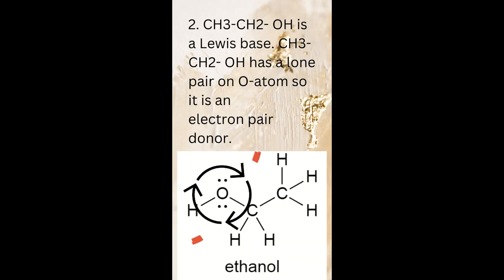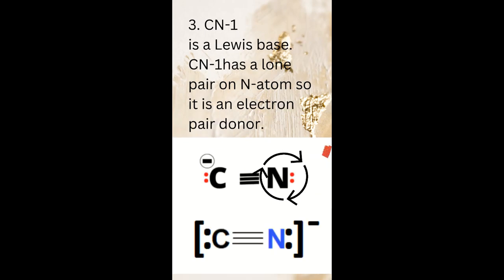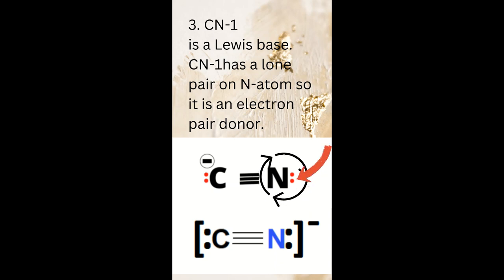Number two: CH₃CH₂OH is a Lewis base because CH₃CH₂OH has a lone pair on the oxygen atom, so it is an electron pair donor. Number three: CN⁻ ion is a Lewis base because CN⁻ ion has a lone pair on the nitrogen atom, so it is an electron pair donor.